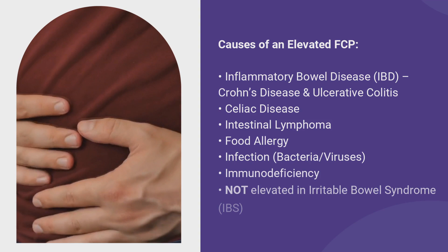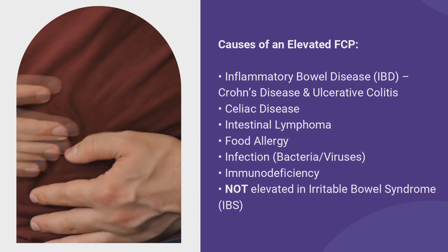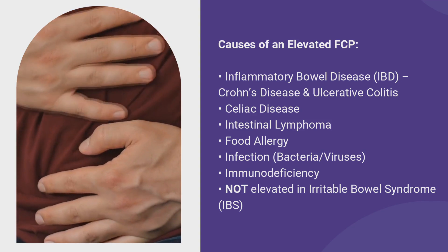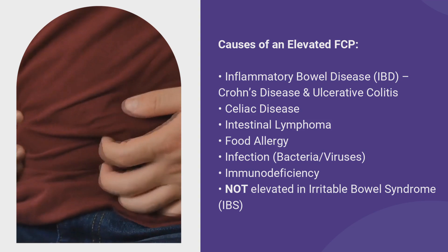Fecal calprotectin is a test for intestinal inflammation. It is a breakdown product of white blood cells, so when you have inflammation in your bowel it can be elevated. It can be elevated in a number of conditions, not just inflammatory bowel disease like Crohn's and colitis, but also in celiac disease, lymphoma, and food allergies.